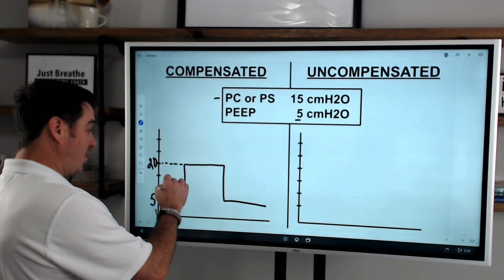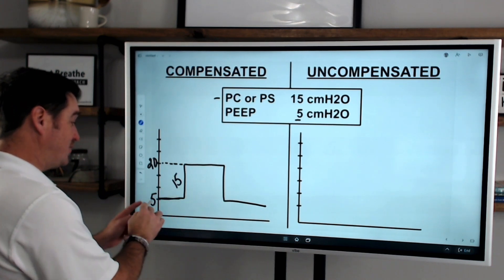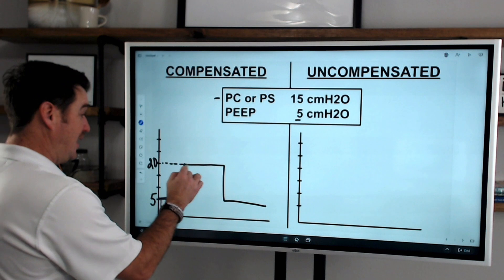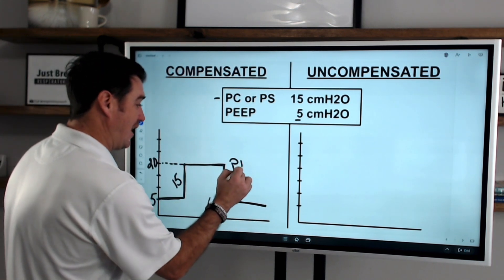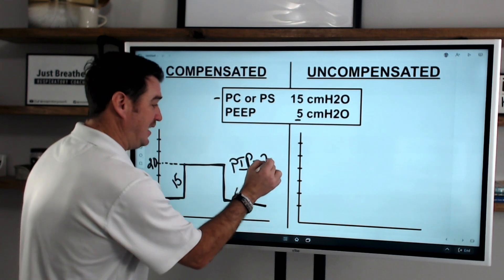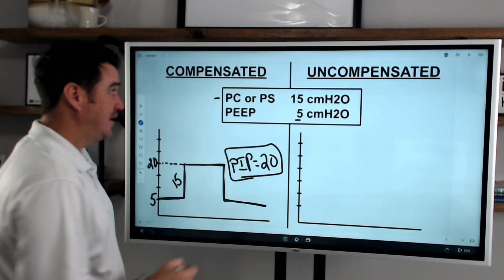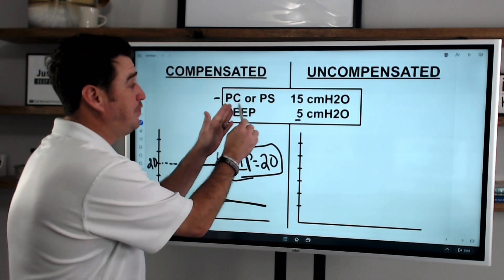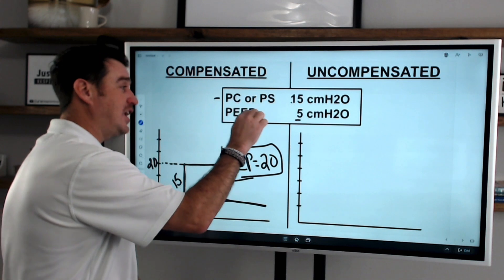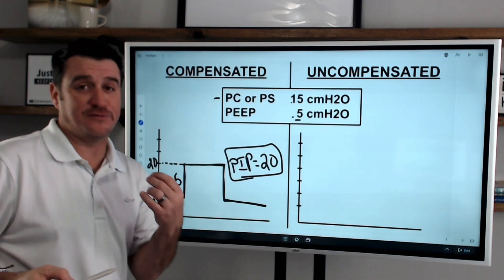So, you can see where here we put the delta P of 15 here, held it and then returned back to baseline. So, this actually made our PIP equal 20. This is when you're compensating. See, the ventilator understands that, okay, I'm going to put this 15 on top of this PEEP of 5.